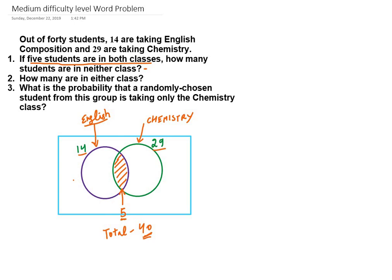We are given that 14 are taking English, so these 14 include those who are taking only English as well as those who are taking English and Chemistry both. So 14 means the complete circle will represent 14. How many will be there in this part of the circle? 14 minus 5, which is 9 students.